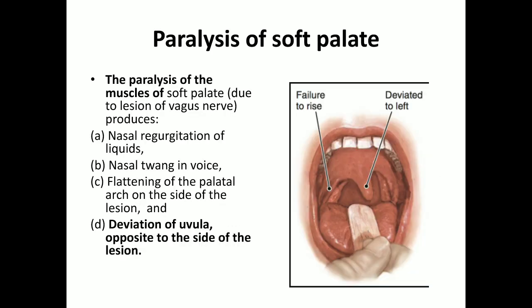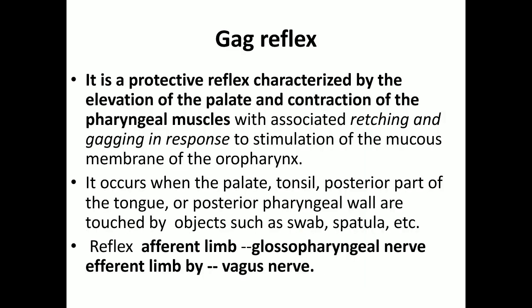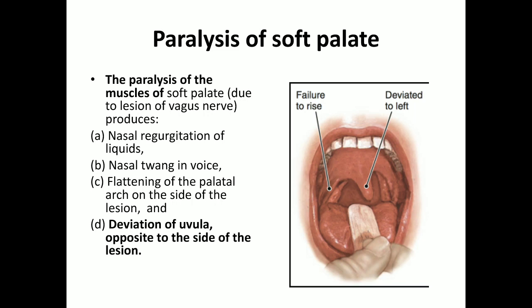Paralysis of the soft palate occurs when its nerve supply is damaged. This leads to nasal regurgitation of liquid, a nasal twang in the voice, and flattening of the palatal arches, since the palatoglossal and palatopharyngeal arches are part of the soft palate. Most importantly, there is deviation of the uvula to the opposite side of the lesion, due to contraction of the muscles on the normal side.